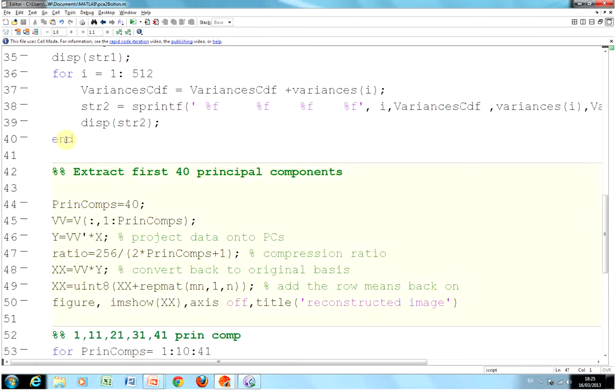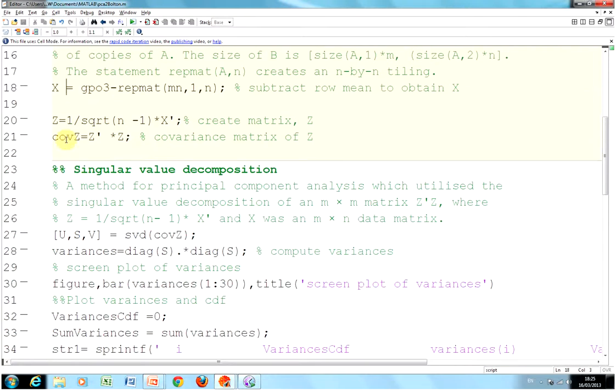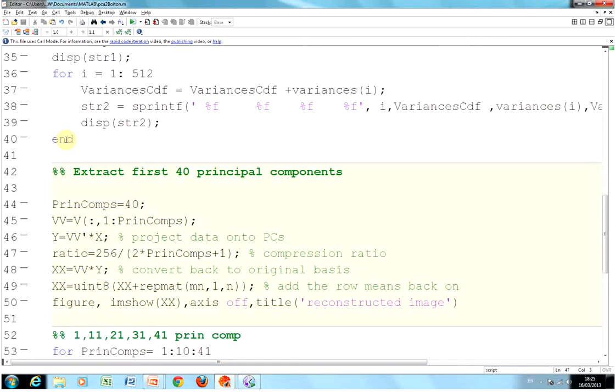On this one here, I just took the first 40 principal components. Remember, V was the eigenvector, so all the rows, columns 1 to 40. And I got the matrix Y, and I projected that onto the principal components. So I took those 40, and then I took it by the matrix X, which is up here somewhere, that's the mean centered on line 18.